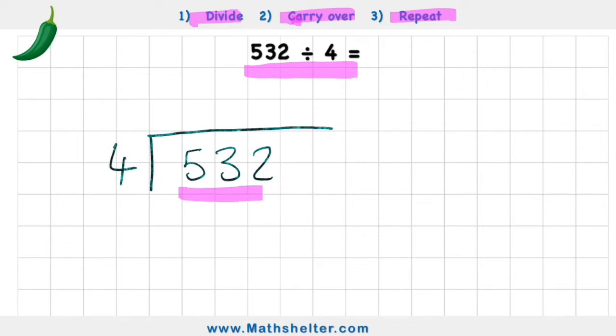Now just for our knowledge, this number inside we call the dividend and the number on the outside we call the divisor. Now this might be a big number for us to do all in our head, so luckily we can use that old trick of partitioning the number, breaking down the number into smaller parts to help us do it step by step.